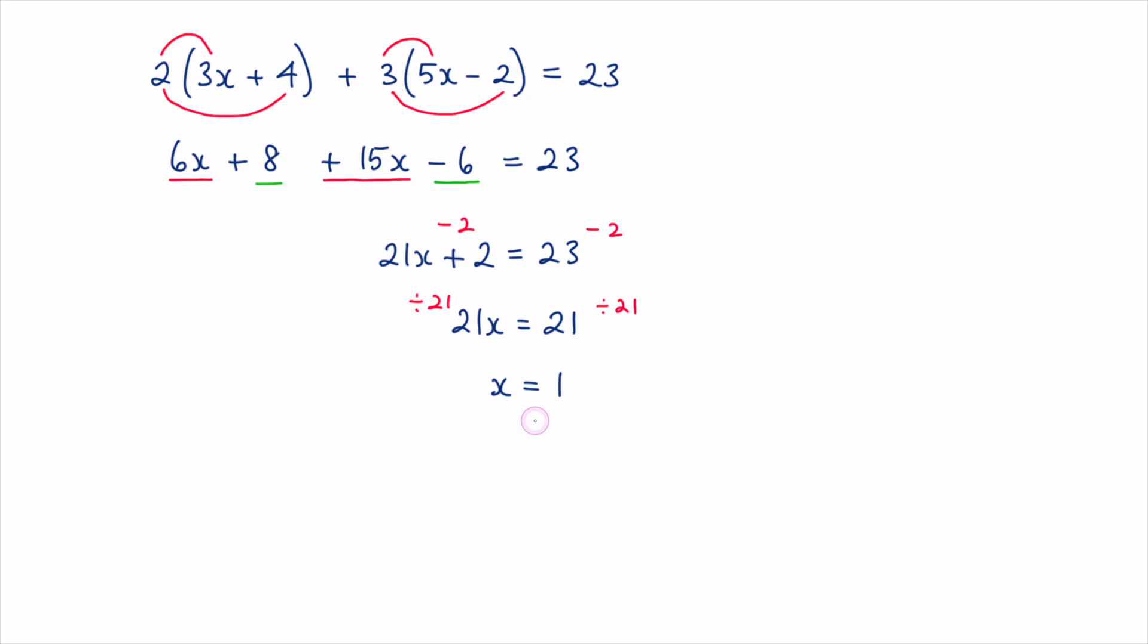Once we have the answer we should check this solution by substituting x equals 1 back into the original equation. So I get 3 times 1. That's 3 plus 4 is 7. 2 multiplied by 7 is 14. Here we'd have 5 multiplied by 1 is 5. 5 subtract 2 is 3. And 3 multiplied by 3 is 9. And obviously we're adding these two values together. 14 plus 9 is 23. So my answer is correct.